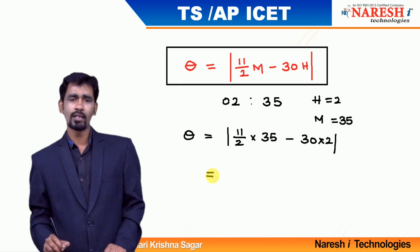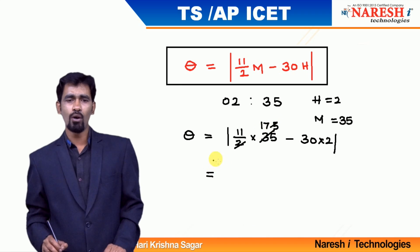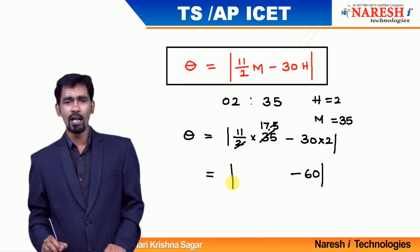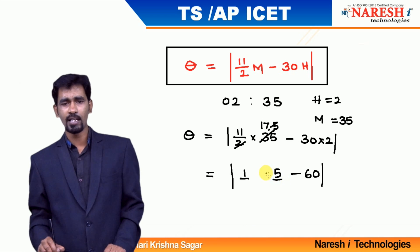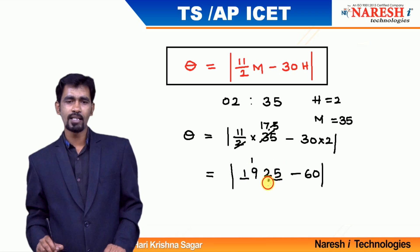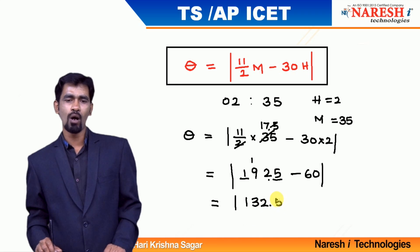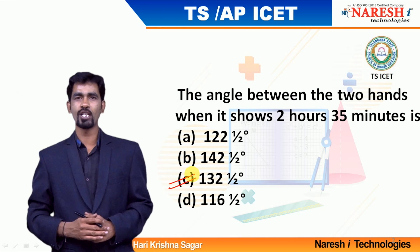Theta equals 11/2 into m — m is 35 — minus 30 into h, where h is 2. Calculating: 11/2 into 35 equals 192.5, and 30 into 2 equals 60. So 192.5 minus 60 gives 132.5. The angle between the minutes and hour hand at 2:35 is 132.5 degrees. Since 132.5 is available as option C, mark it as the answer.